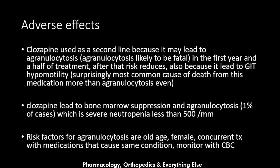Now let's discuss the adverse effects. Clozapine is used as a second-line treatment for schizophrenia because it may cause agranulocytosis, which is likely to be fatal in the first year and a half of treatment, after which the risk reduces. It also causes GI hypomotility. Surprisingly, the most common cause of death from this medication — more than agranulocytosis — is gastrointestinal hypomotility.